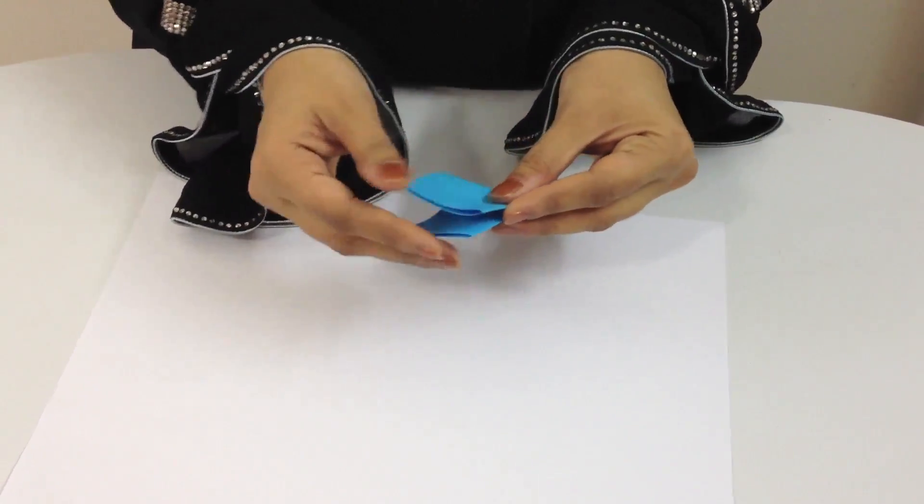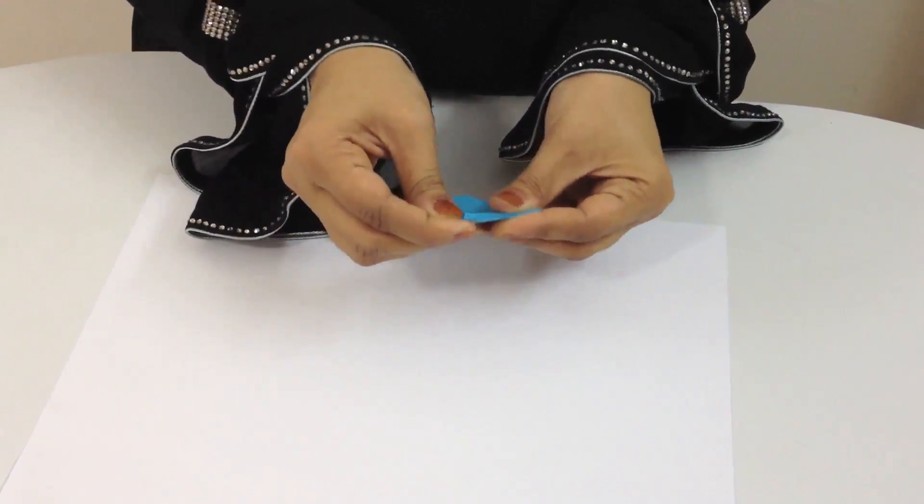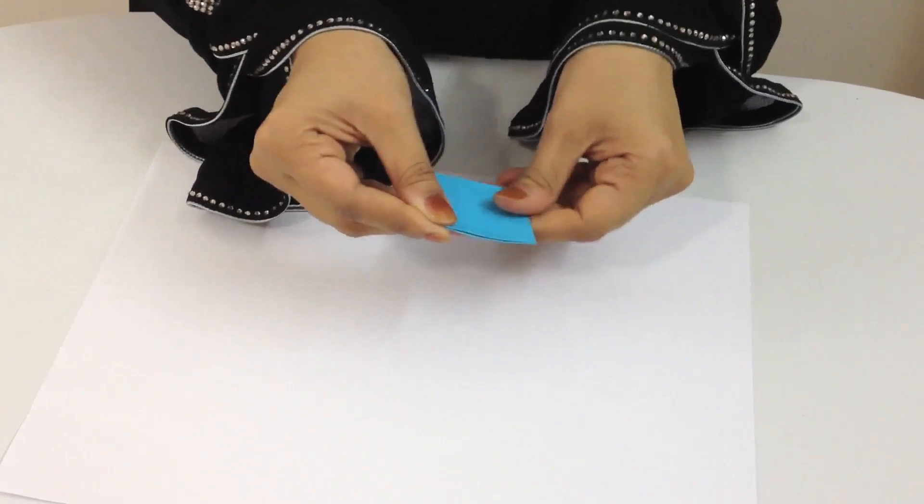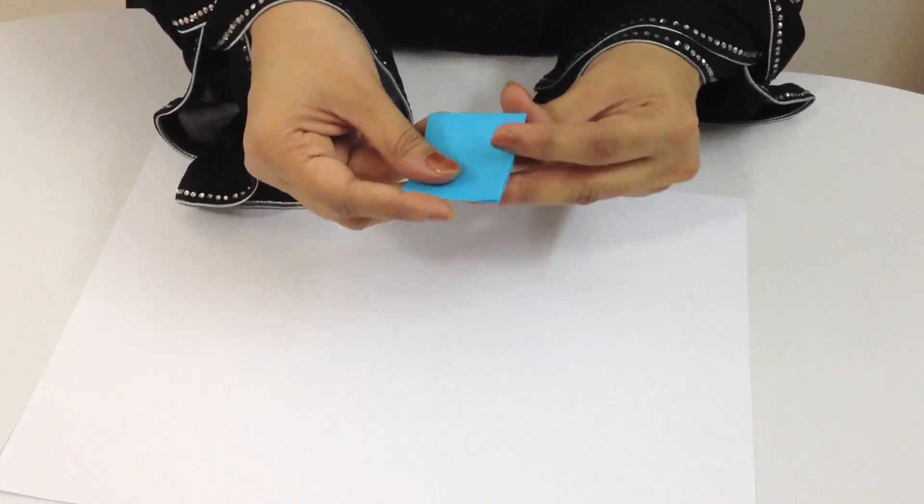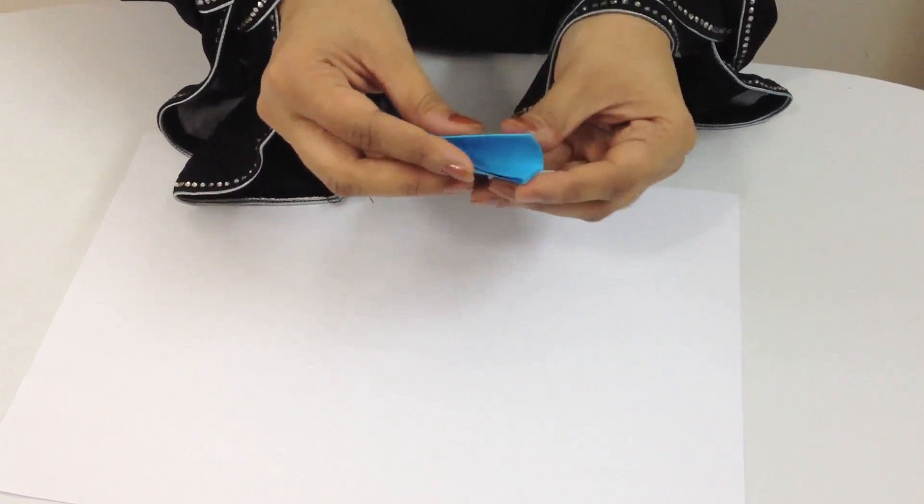To make eight equal parts, we have to fold the paper in half and then again fold it so you see a quarter, and then you have to fold it once more. So you're folding it three times.